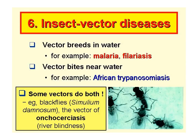And of course some vectors do both. The black fly, Simulium damnosum, which transmits river blindness — Onchocerciasis — breeds in and bites near water.